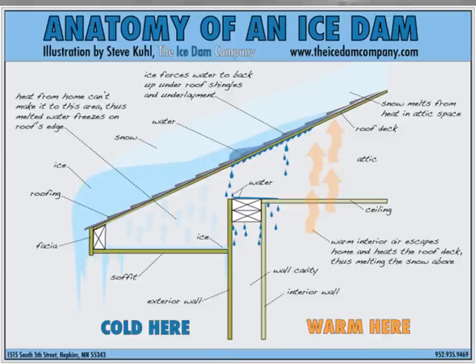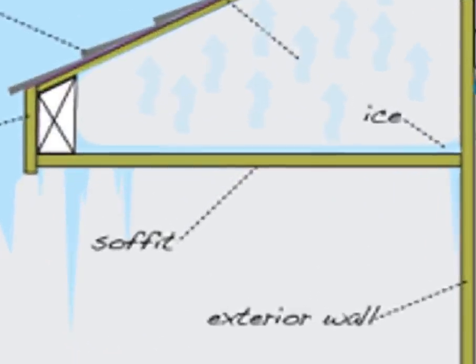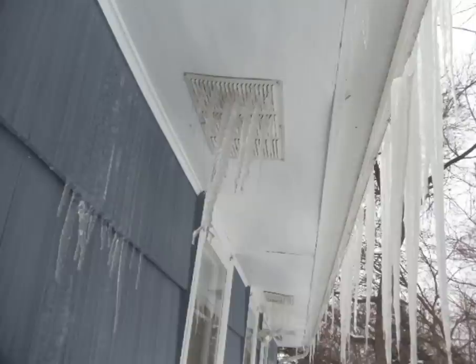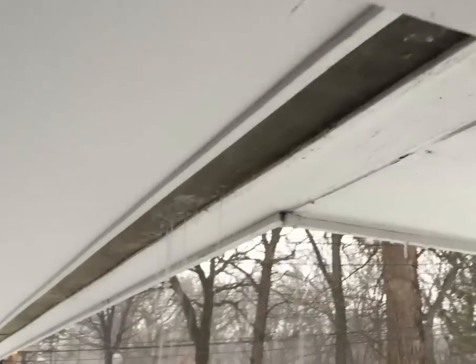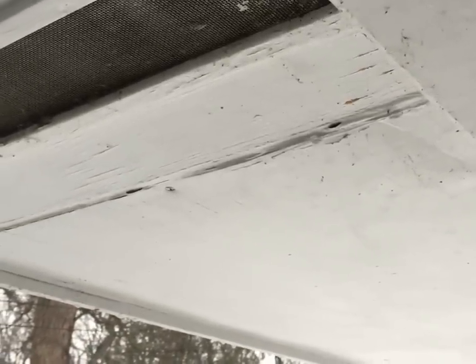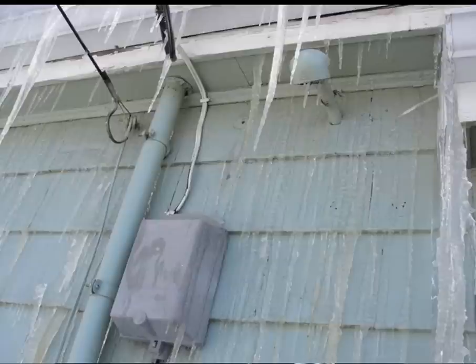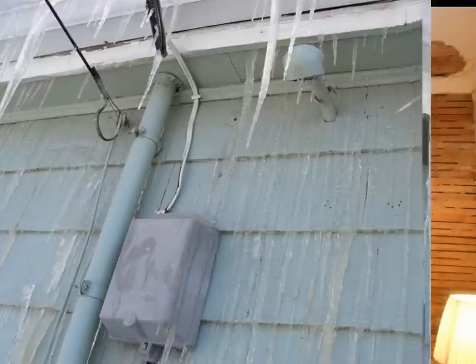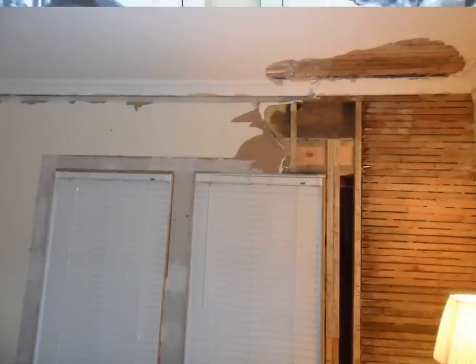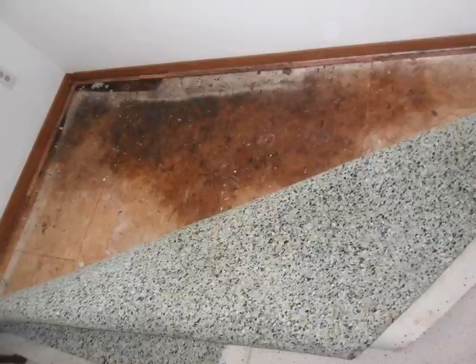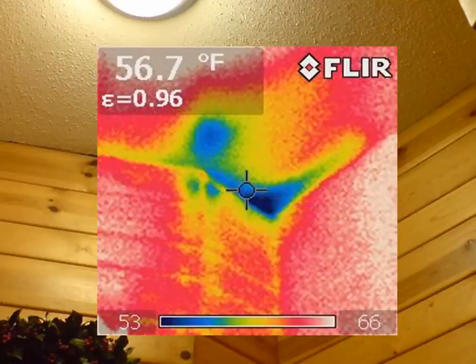What's worse is icicles coming out of your soffit — that's especially bad news. If you've got water dripping out of your soffit during melt days, that's really bad news. If you have ice coming down the side of your house, you've got big problems. Water coming through your ceiling is typically the point at which people actually take action and do something about it.